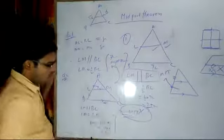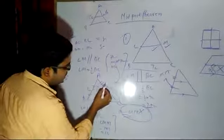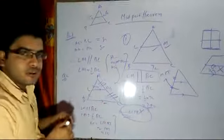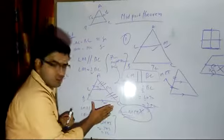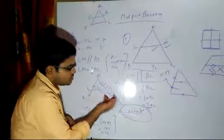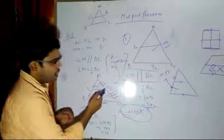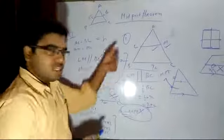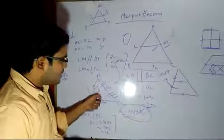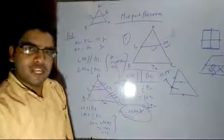Another thing they may ask: if we have proved that this side is equal to this in a particular question, they may also ask you to find the value of BC and second, prove that these two sides are equal. Then you will say: by converse of midpoint theorem, which I will discuss right now, we can say that these two segments are equal in measurement.